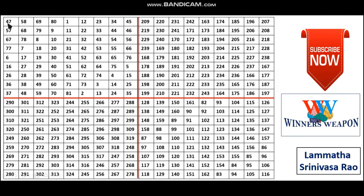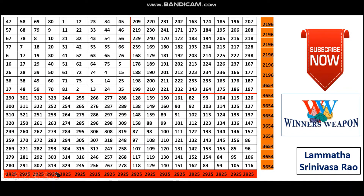Then we can check the sum of all rows and all columns. If we consider all columns, we got 2925 everywhere — the magic constant. But we did not get the total sum of 2925 in the rows. No single row got the sum of 2925; all are different values.